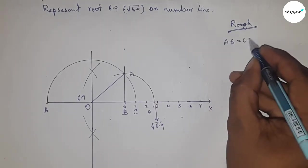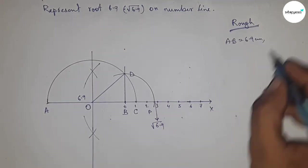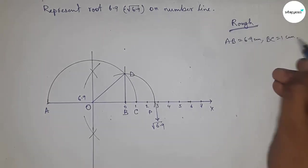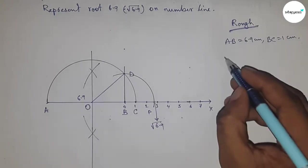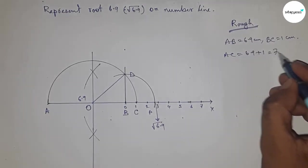Given: AB equals 6.9 centimeters, BC equals 1 centimeter, so we can write AC equals 6.9 plus 1, which is 7.9 centimeters.